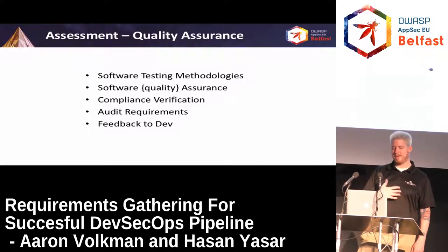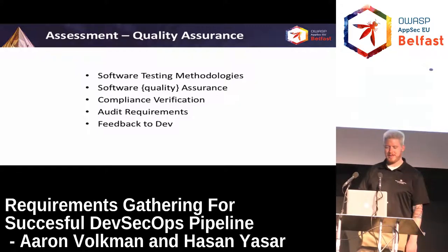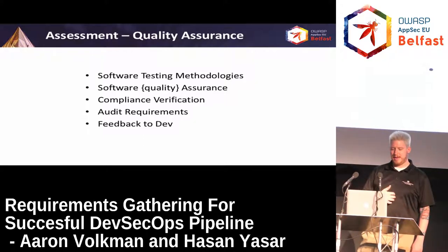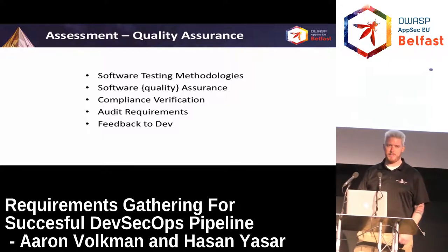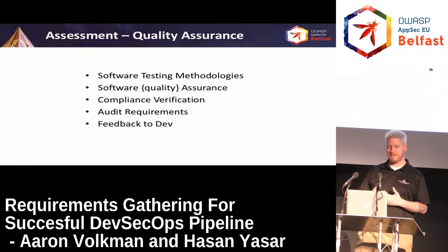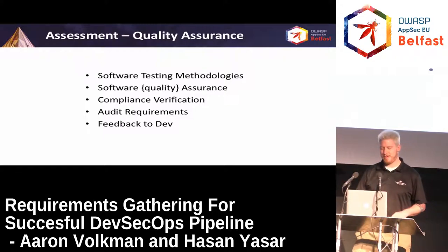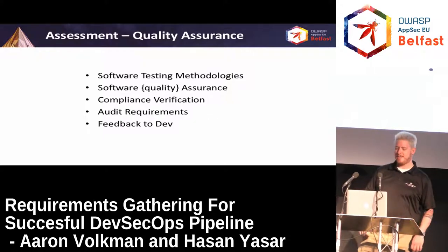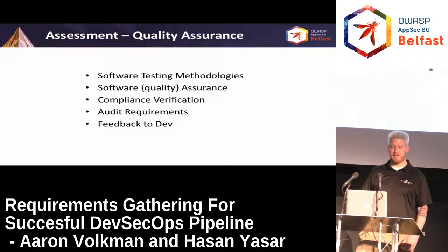Looking at quality assurance: we look at their software testing methodologies and what technologies they use, how they do software assurance as well as quality assurance. We take a look at how they do compliance verification and ask about their audit requirements — in the US they might have HIPAA requirements if they deal with health safety data, PCI compliance if they're dealing with payment card data — because all of that feeds into what activities we have to instrument in our DevOps pipeline. We also have to understand how they give feedback to the development team and how that interaction takes place.